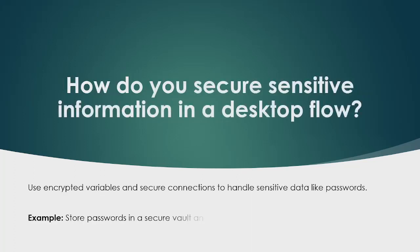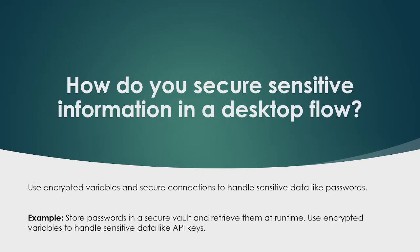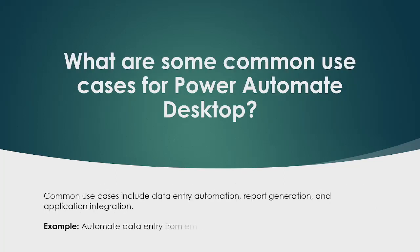The next question is: how do you secure sensitive information in a desktop flow? To secure sensitive information, you can use encrypted variables and secure connections to handle sensitive data like passwords. For example, store passwords in a secure vault and retrieve them at runtime. Use encrypted variables to handle sensitive data like API keys.